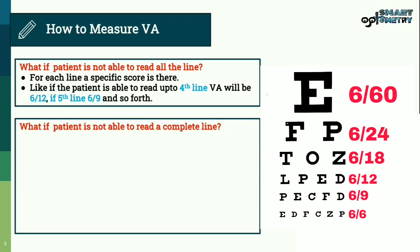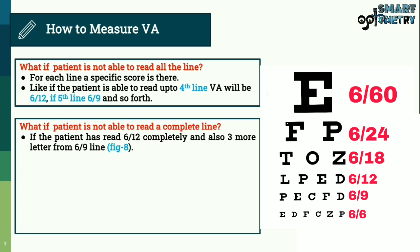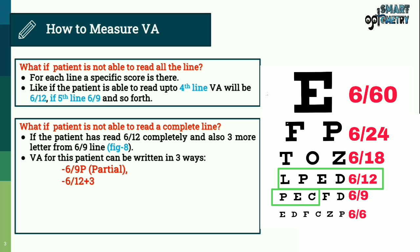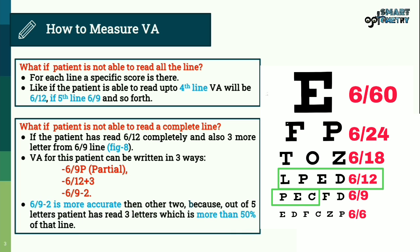What if the patient is not able to read a complete line? Suppose a patient reads the 6/12 line completely and also 3 more letters from the 6/9 line. The visual acuity score can be written in three ways: '6/9 partial' (since the 6/9 line has 5 letters and the patient read 3), '6/12 +3', or '6/9 -2' (patient missed 2 of the 5 letters). The most accurate score is 6/9 -2, because the patient read more than 50% of the 6/9 line, so we shift to that line.